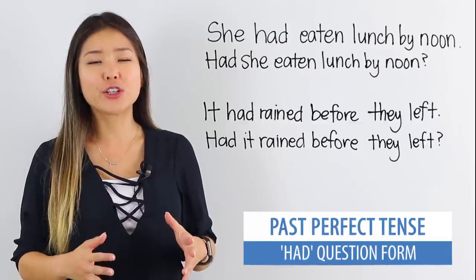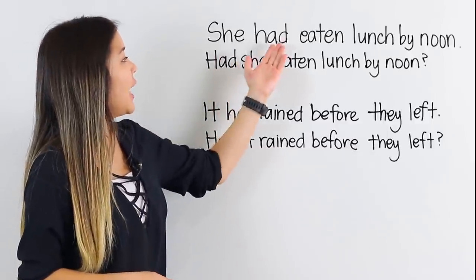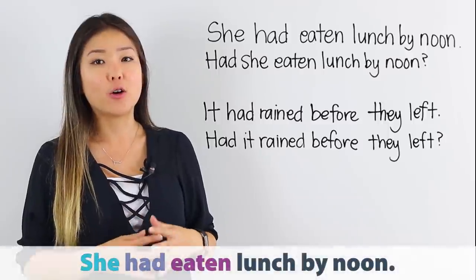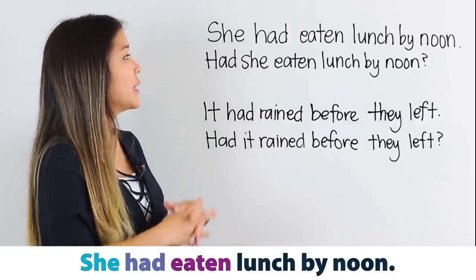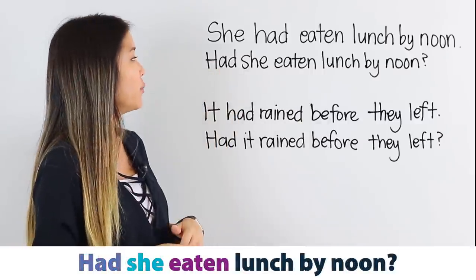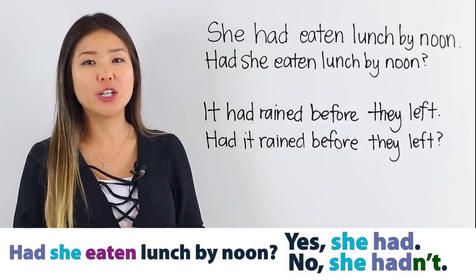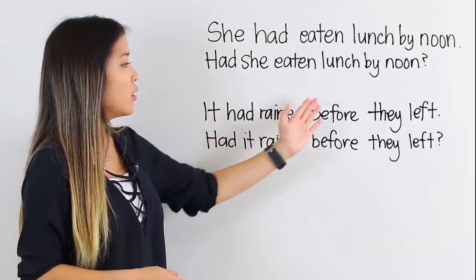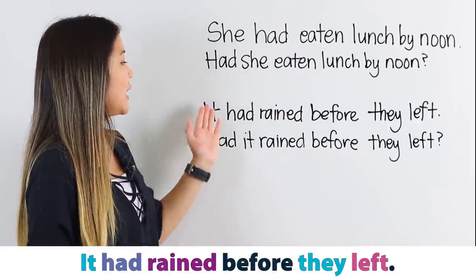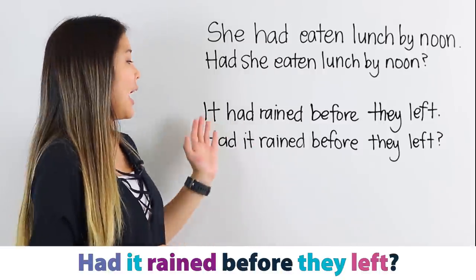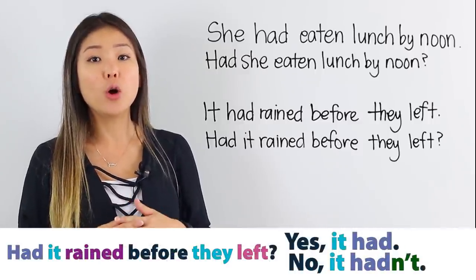Now let's take a look at questions using 'had' in the past perfect tense. Take a look at the first sentence: 'She had eaten lunch by noon.' To turn this into a question, simply change the order of the first two words. Instead of 'She had,' we say 'Had she' — 'Had she eaten lunch by noon?' You can answer: 'Yes, she had' or 'No, she hadn't.' The next sentence is: 'It had rained before they left.' Simply switch the order of the first two words — instead of 'It had,' say 'Had it' — 'Had it rained before they left?' To reply: 'Yes, it had' or 'No, it hadn't.'